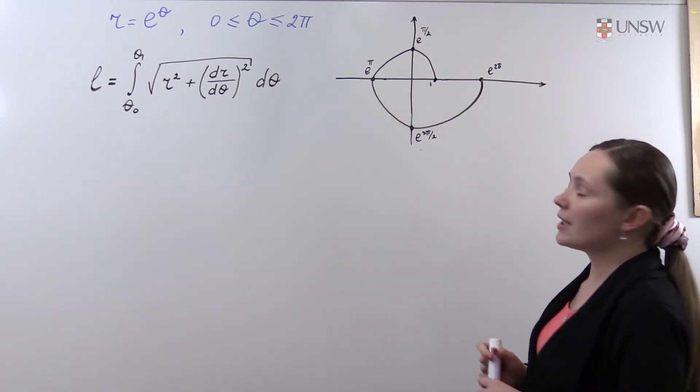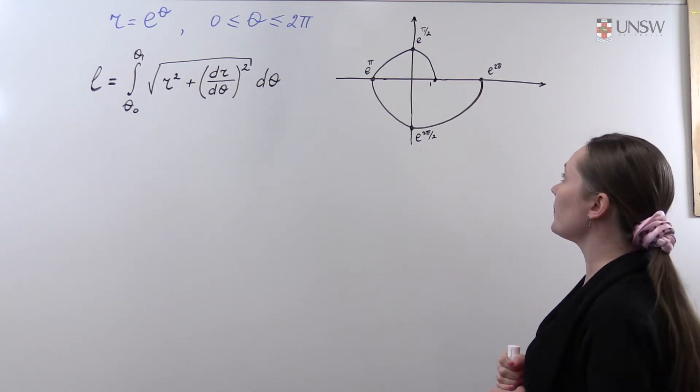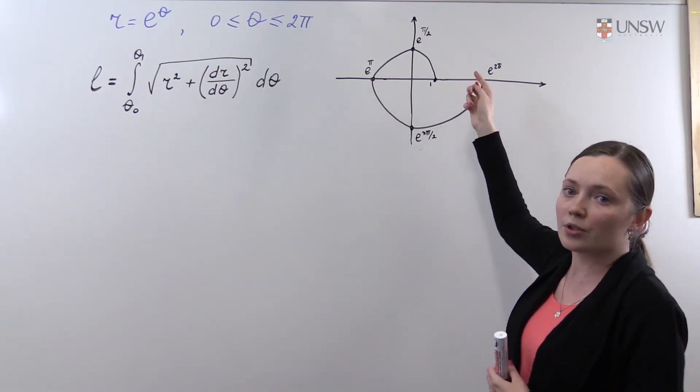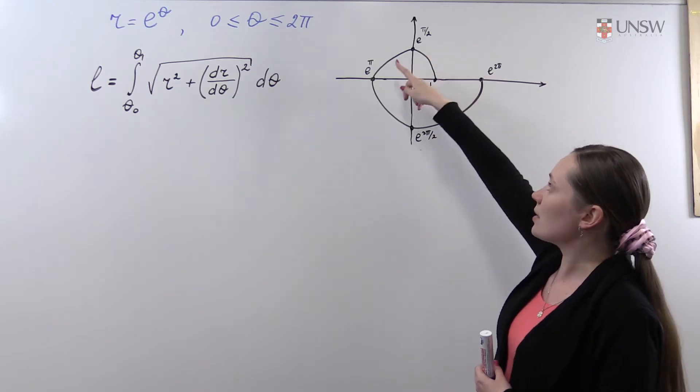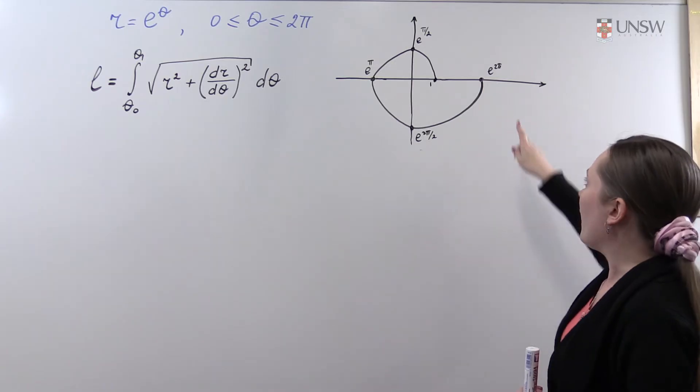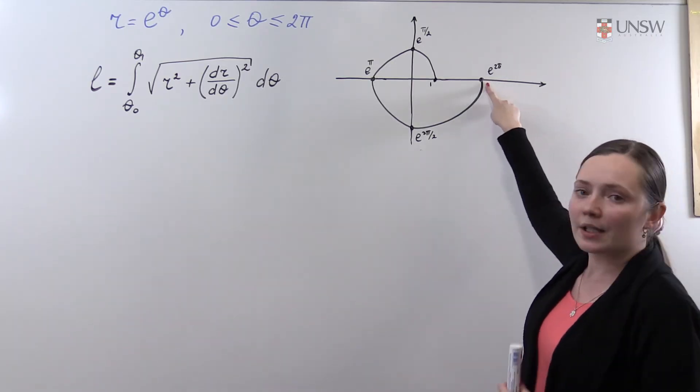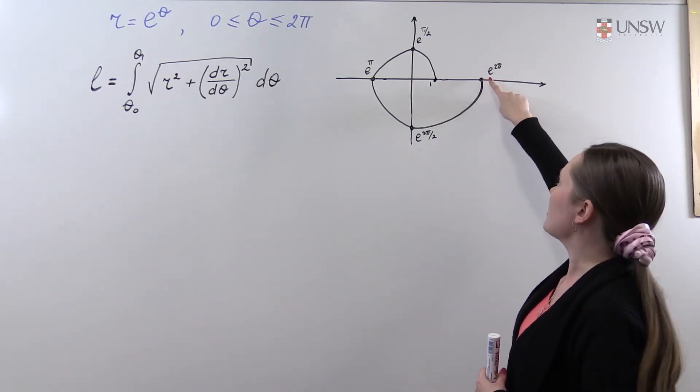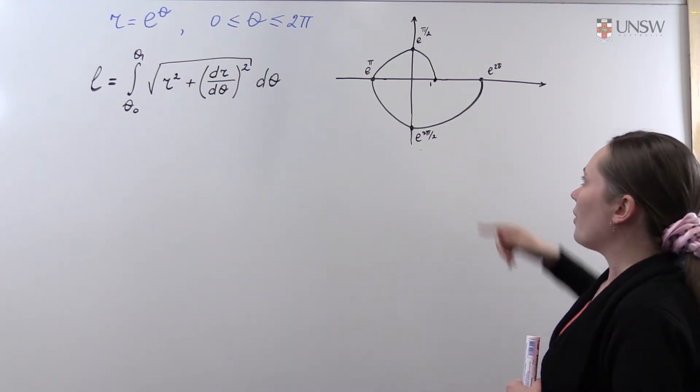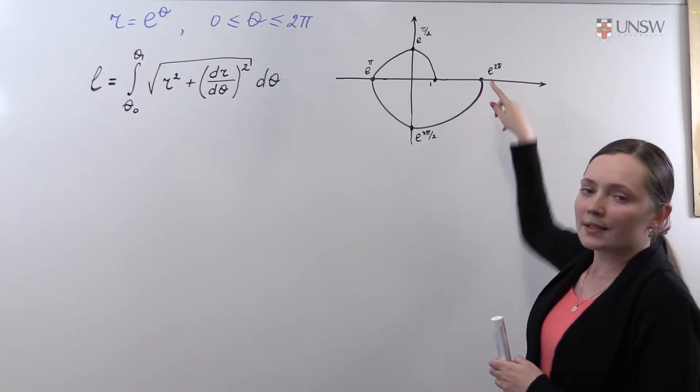This is the point here. As theta increases from 0 to 2π, the radius is also increasing, and therefore we obtain a spiral. The end point is when theta equals 2π, which is e to the power 2π. So we need to find the length of this spiral.